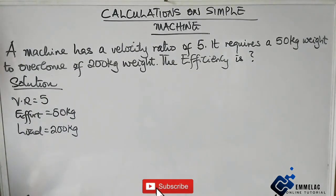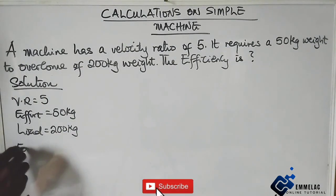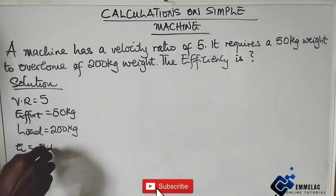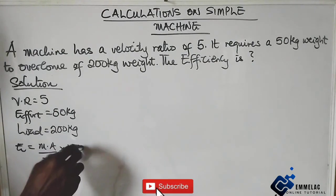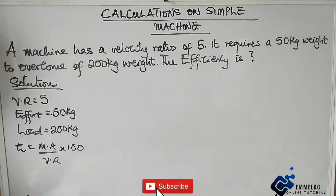So from the normal formula, efficiency equals mechanical advantage over velocity ratio times 100. From this equation here, we are going to find the efficiency.